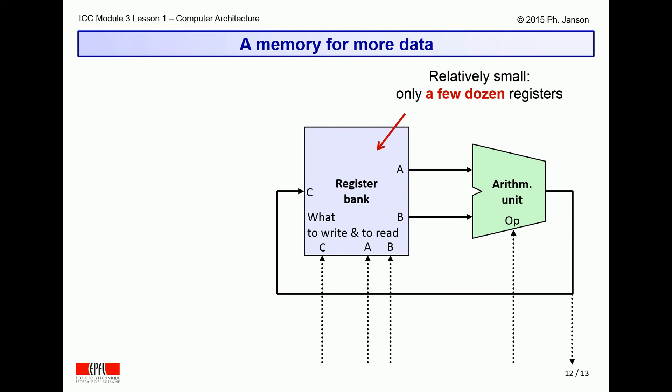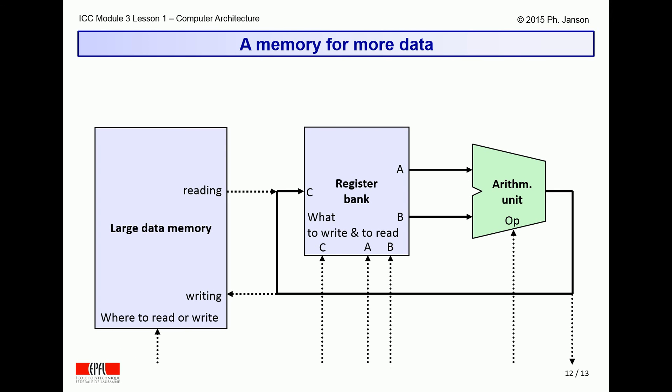All this being said, registers are sufficiently expensive that their numbers are in practice limited to a few dozens. For many programs involving a lot of data and variables, a few dozen registers is not sufficient. Thus computers are provided with not just a large memory for algorithm instructions, but also a large and less expensive memory for more data than the registers can contain.